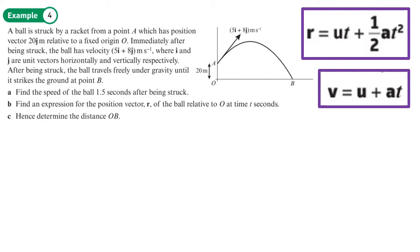A ball is struck by a racket from point A which has position vector 20j, and that's on the diagram here. Let's mark on our i and j directions. Immediately after being struck, the ball has velocity 5i plus 8j, where i and j are vectors horizontally and vertically respectively. After being struck, the ball travels freely under gravity, so we have acceleration negative 9.8 j.